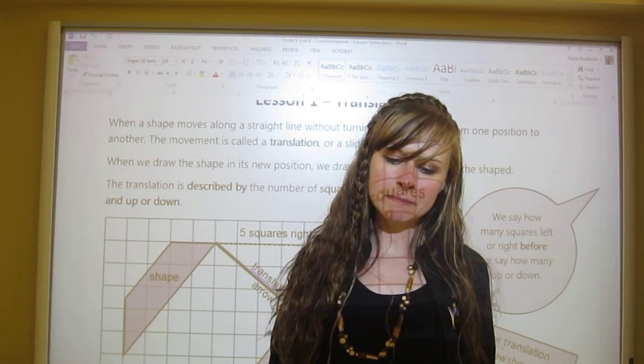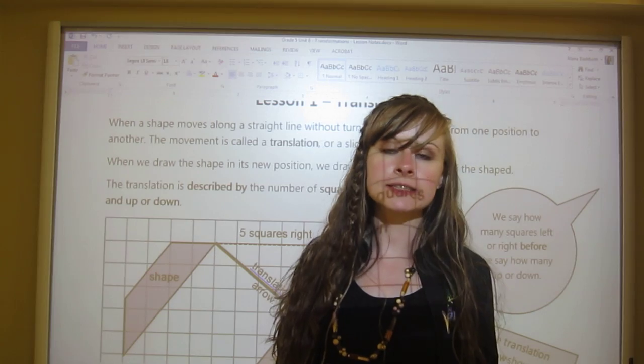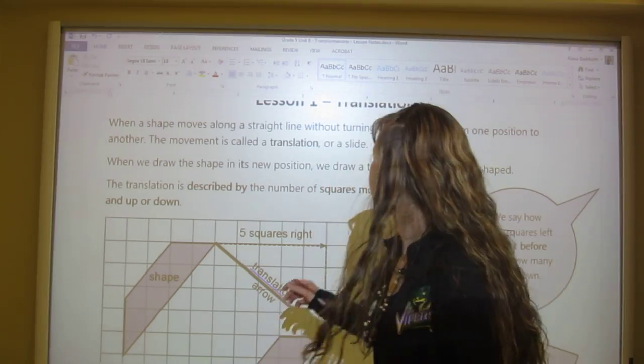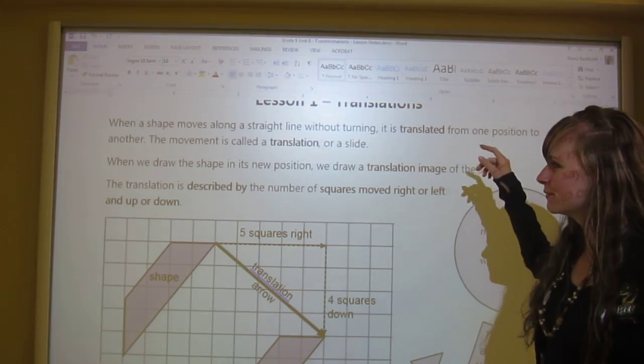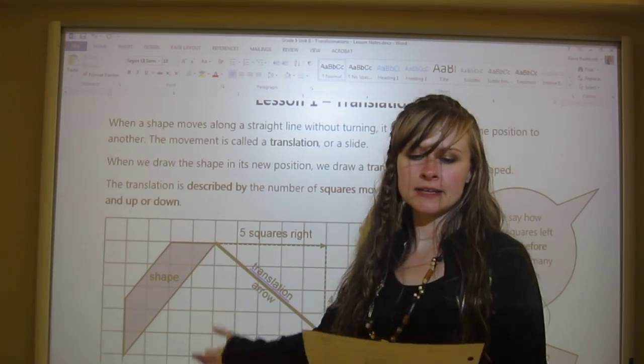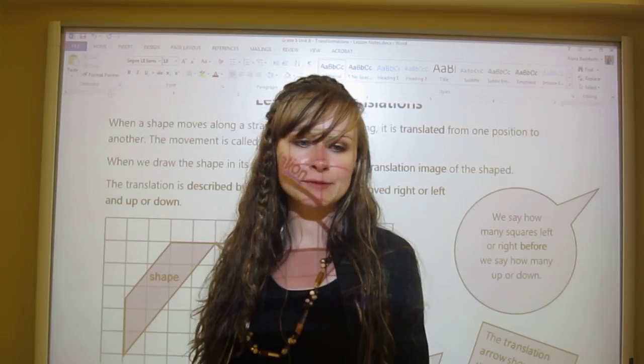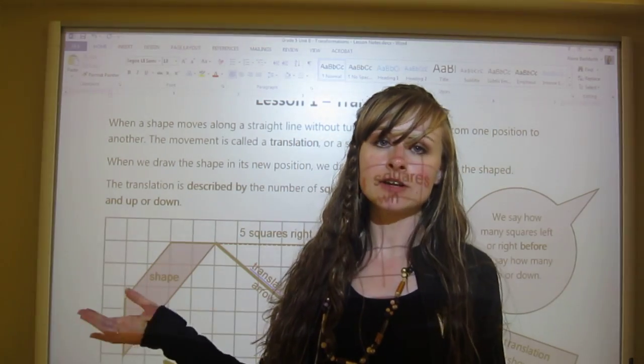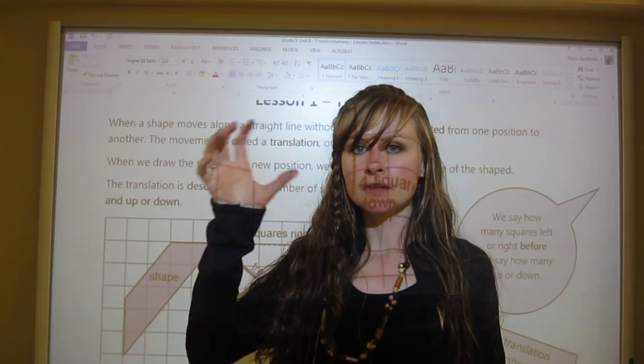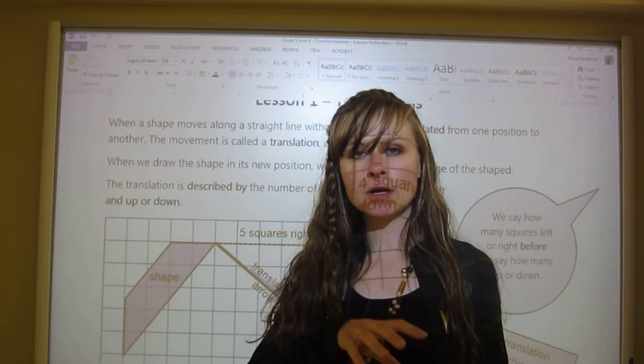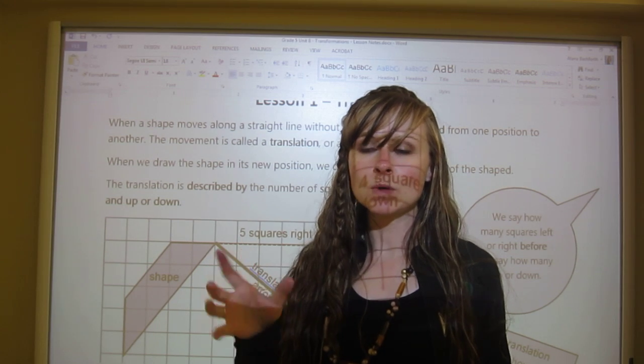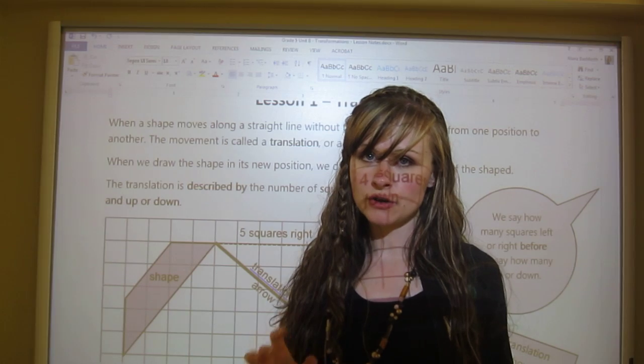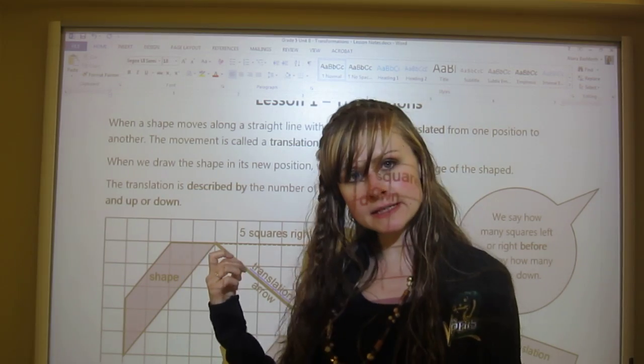When we draw the shape in its new position, we draw a translation image of the shape. The translation is described by the number of squares moved right or left and up or down. We're moving shapes and also saying which direction they have been moved. We always do this on graph paper, on square paper like this.